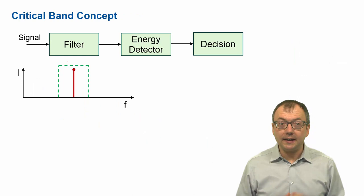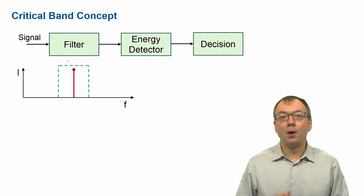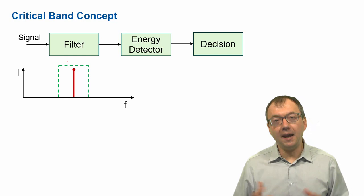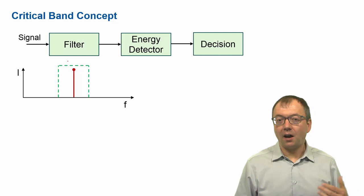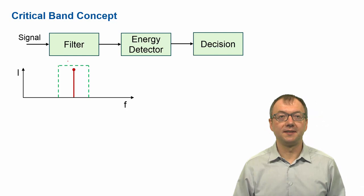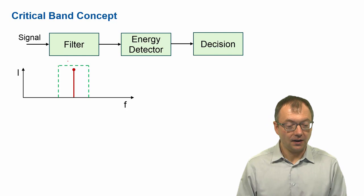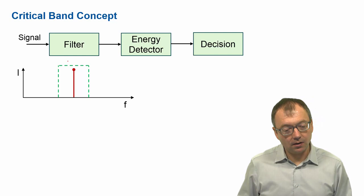This gives rise to the critical band concept. Consider the auditory system to be composed of a bank of filters. The auditory system looks at the output of the filters for changes in intensity or energy to make a decision whether a probe tone was heard or not. Our signal — noise, tone, or any sound — comes into the auditory system and is filtered. At the output of the filter we detect the energy. The filter has been depicted in this graph with green dashed lines.